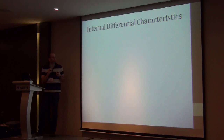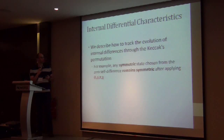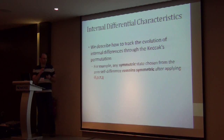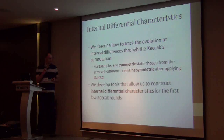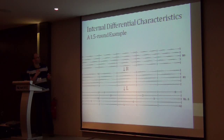To devise an attack, we construct internal differential characteristics for the Keccak permutation. In the paper we describe how to track the evolution of internal difference sets through the Keccak permutation. For example, any symmetric state chosen from the zero internal difference set remains symmetric after applying the first four Keccak mappings. We also developed tools to construct internal differential characteristics for the first few Keccak rounds.